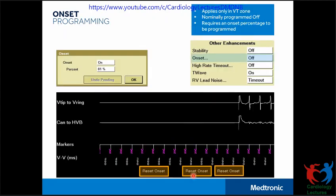The onset feature operates in the VT zone only and is nominally off. When turned on, we also have to program the percentage. During an episode, the device continuously analyzes the average of the current four ventricular intervals compared to the average of the previous four ventricular intervals. It compares the difference between these two average rates to the programmed onset percentage. If the percent change is greater than the programmed percentage, the onset criteria is met and VT is detected.